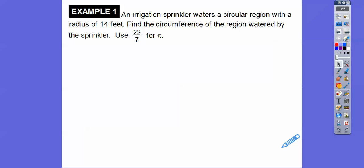So an irrigation sprinkler waters a circular region with a radius of 14 feet. Find the circumference of the region that's watered by the sprinkler. So remember, 2 pi r or pi times diameter. In this case, we're using the radius. So we're going to do 2 pi r. Now we're going to use this for pi. So it's going to be 2 times this times the radius of 14 right there.